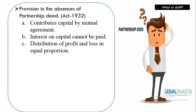The third and most important point is the distribution of profit and loss in equal proportion. If there is no partnership deed, there is no question of how profit and loss will be shared — it has to be in equal proportion. Everything will be done in equal proportion.